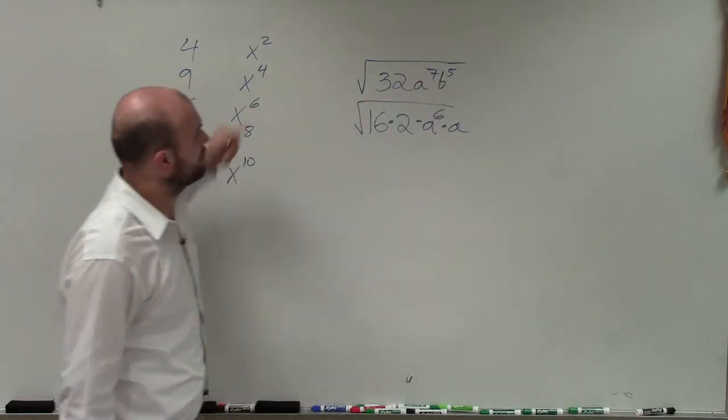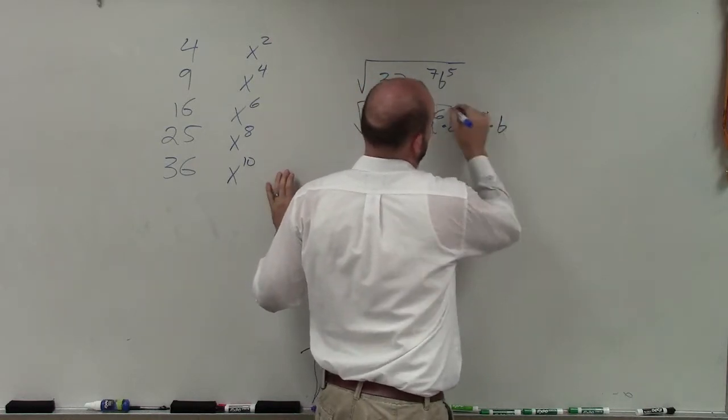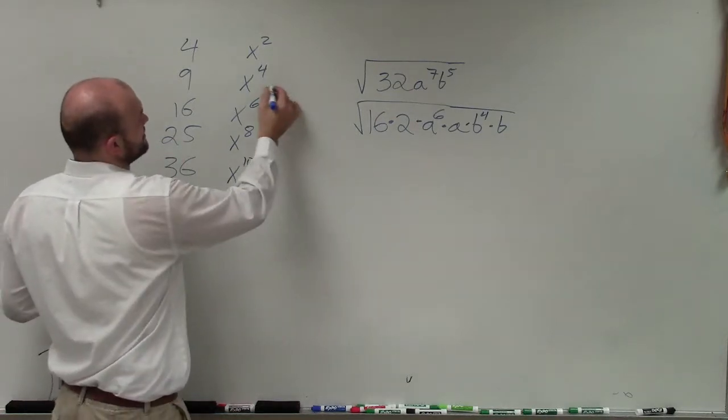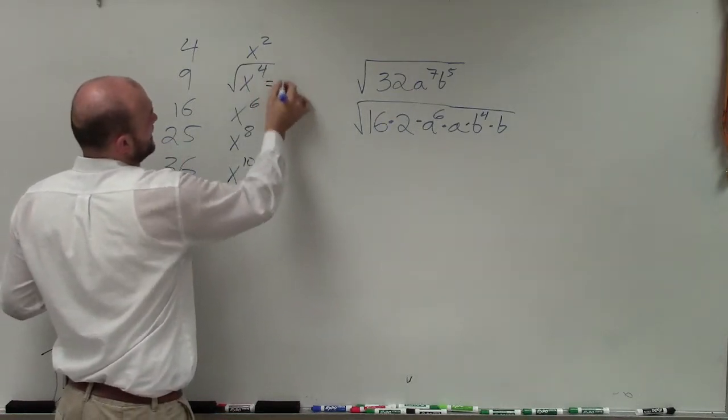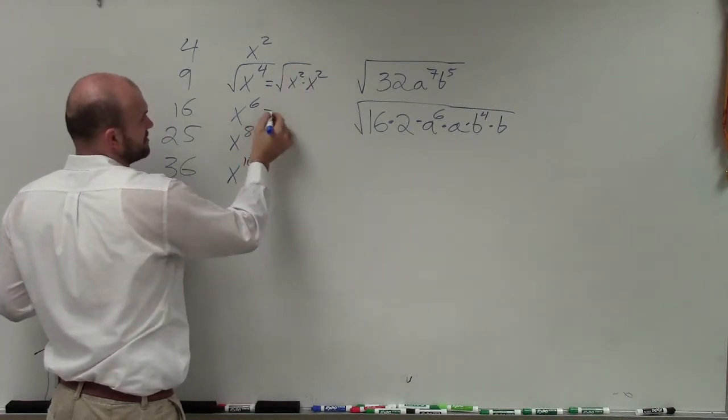b to the fifth can be rewritten as b to the fourth times b. The reason this works is because that is the same as x squared times x squared, and I can take the square root of both of those.